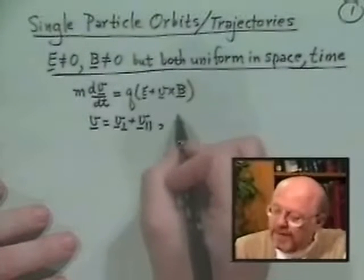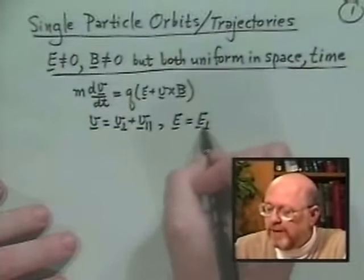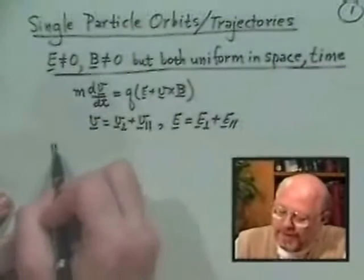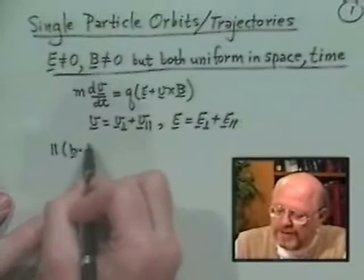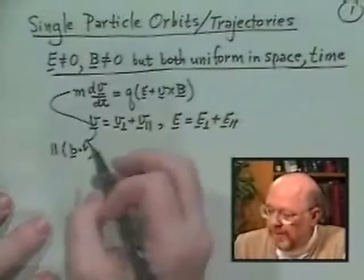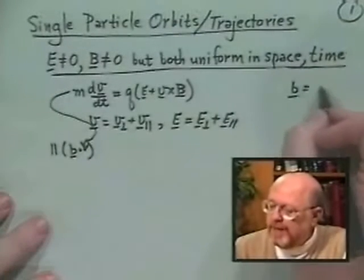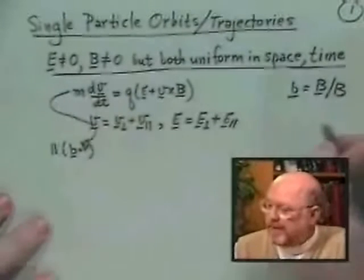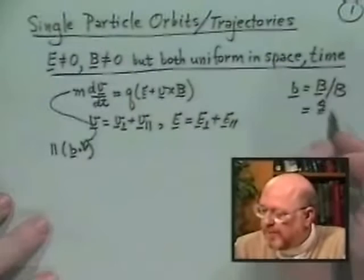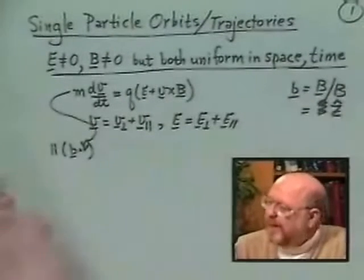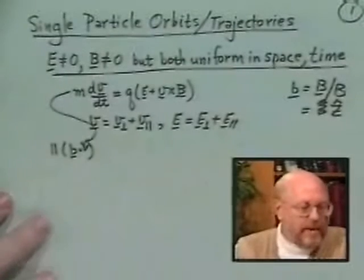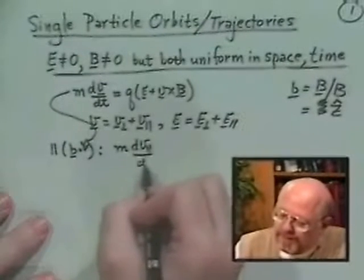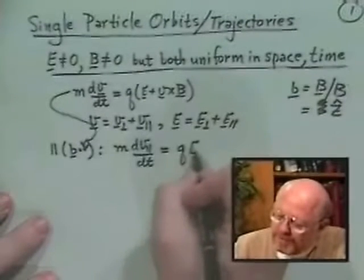Likewise, we can imagine the electric field will have a perpendicular component plus a parallel component. To find the parallel component of the equation of motion, we take a unit vector B along the magnetic field and dot it into the equation — or take the Z component, since B is usually in the Z direction. That gives us M dV_parallel/dt equals Q times E_parallel.